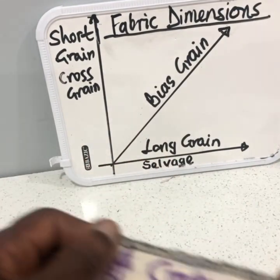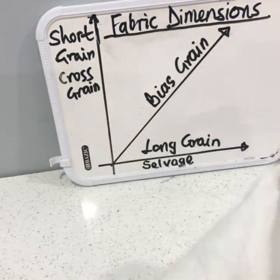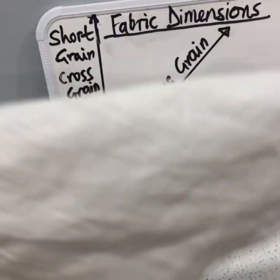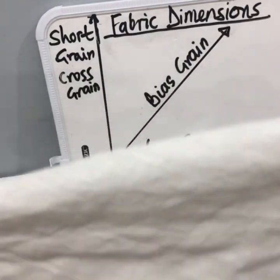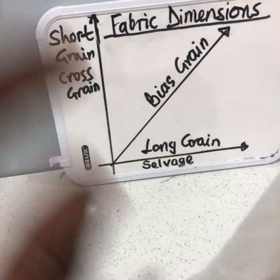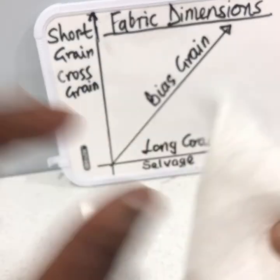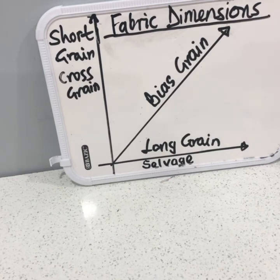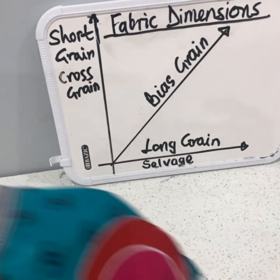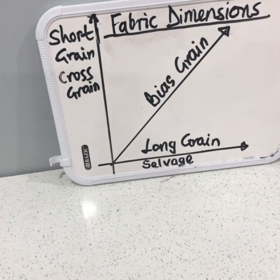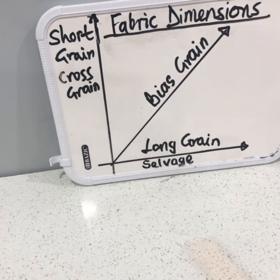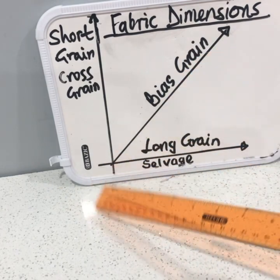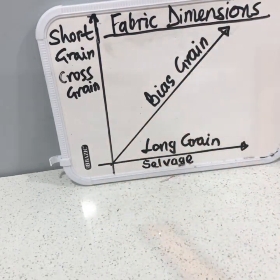We take advantage of the bias behavior of woven fabrics to create bias strips. Bias strips are used for bias binding — you can buy them pre-made or you can create them yourself, and we're going to be creating that in my next video. This is just introductory, to let you know how to identify the various parts of the fabric: the long grain, the bias grain, and the short grain.